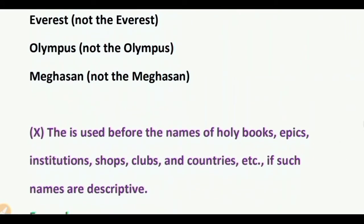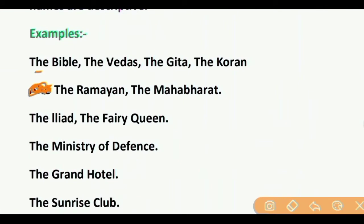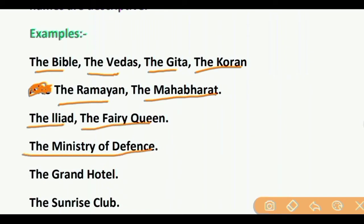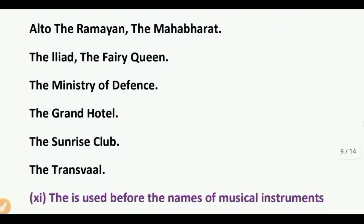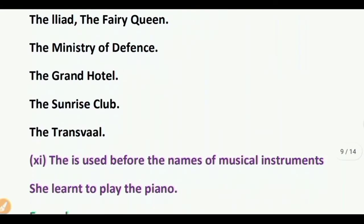Point 10: 'The' is used before the names of holy books, epics, institutions, shops, clubs, and countries if such names are described. Examples: the Bible, the Vedas, the Gita, the Quran, the Ramayana, the Mahabharata, the Ministry of Defense, the Grand Hotel, the Sunrise Club.